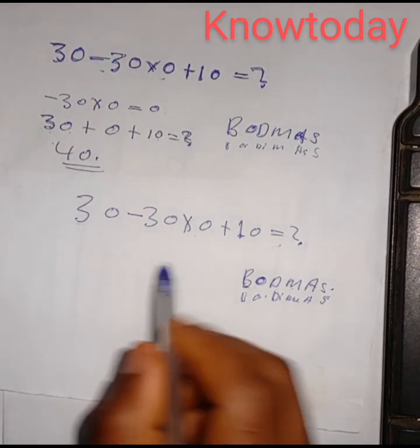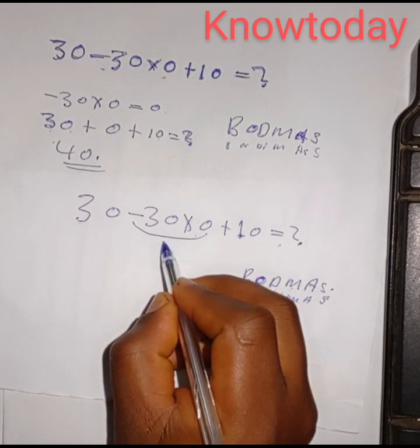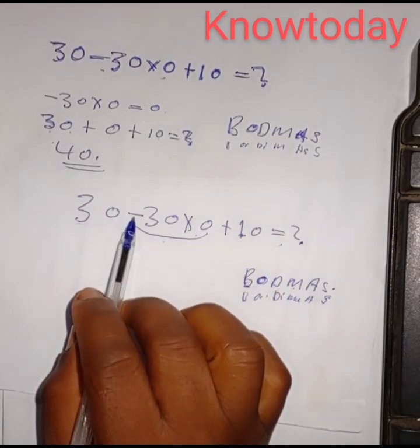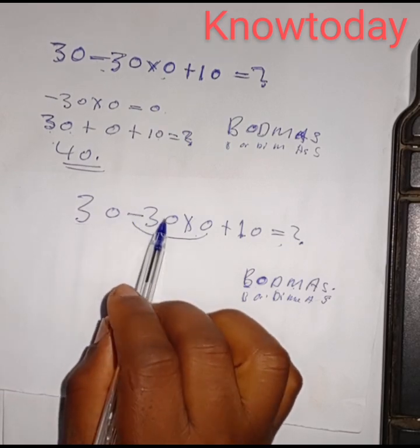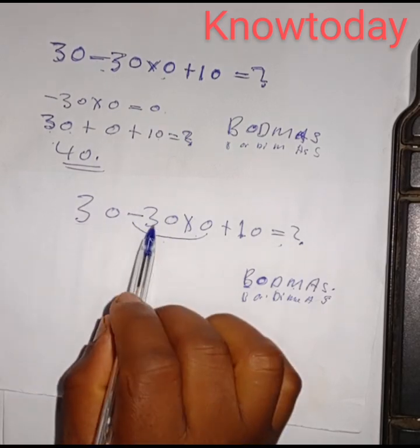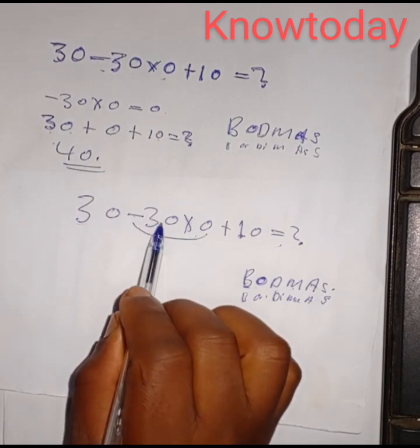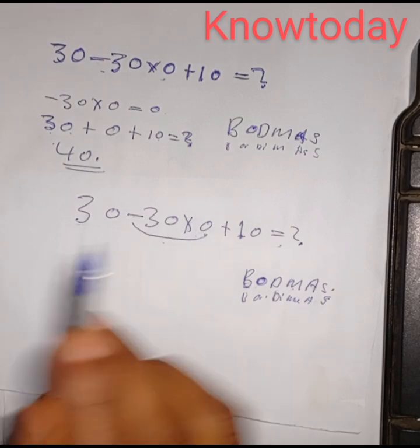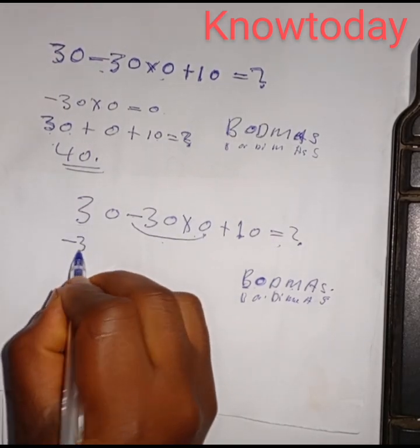So what are we going to multiply? It is negative 30 times zero. Because this negative sign, according to mathematics arithmetic, is attached to this 30. It is not 30 times zero, it is negative 30 times zero. So the first thing I'm going to do is the multiplication: negative 30 times zero equals zero.